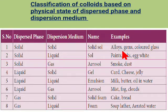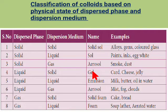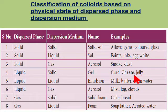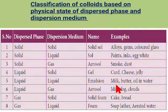Solid in liquid is called a sol. Examples include paints, inks, and egg white. Solid in gas is called an aerosol. Examples include smoke and dust. Liquid in solid is called a gel. Examples include curd, cheese, and jelly. Liquid in liquid is called an emulsion. Examples include milk, butter, and oil in water.